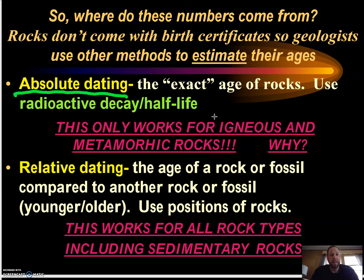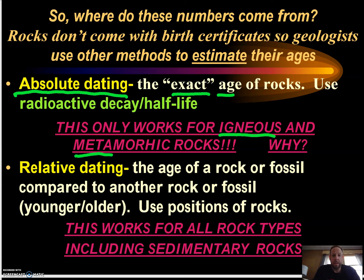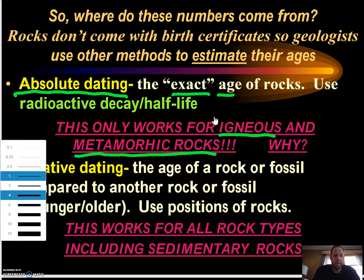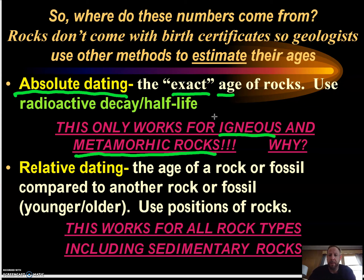Absolute dating is an exact age — like when you ask a little kid how old they are and they say they're seven and three months and 14 days. The thing is, this only works with igneous and metamorphic rocks. The reason is because sedimentary rocks are made of many other rocks.